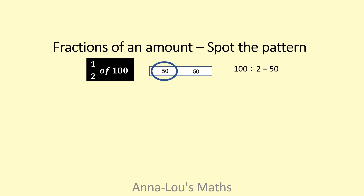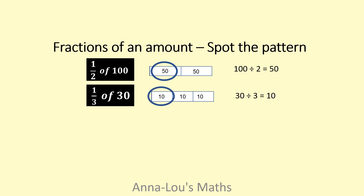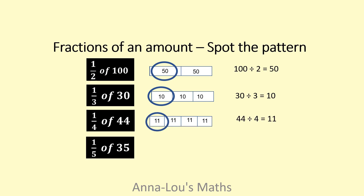So I've done a hundred divided by two. Same as if I need a third of thirty — I'm putting thirty into three separate parts and I'm talking about one of those, so I'm doing thirty divided by three. A quarter of forty-four: forty-four divided by four.